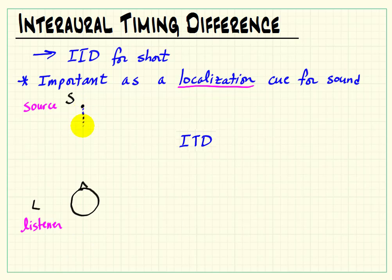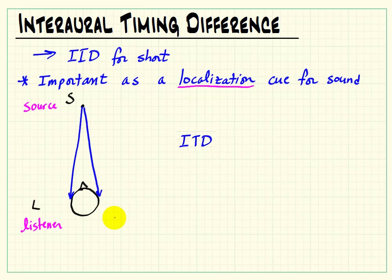That's supposed to be the listener's nose there. Imagine that we've got a source that's just straight on axis — you're facing the source directly. As sound propagates from the source to your ears, we see that the path length should be exactly the same.